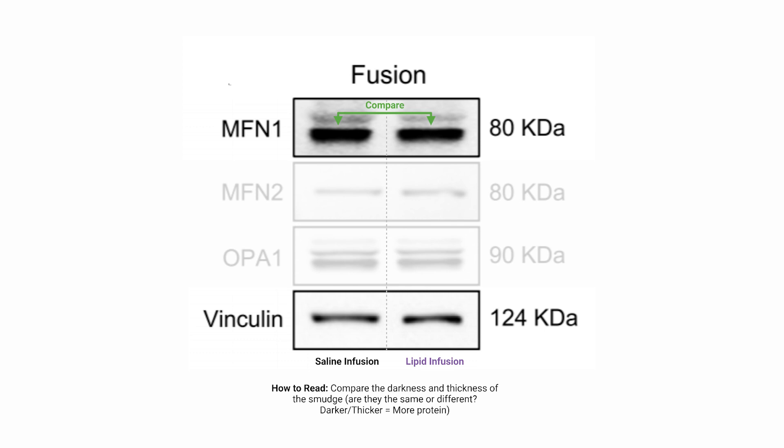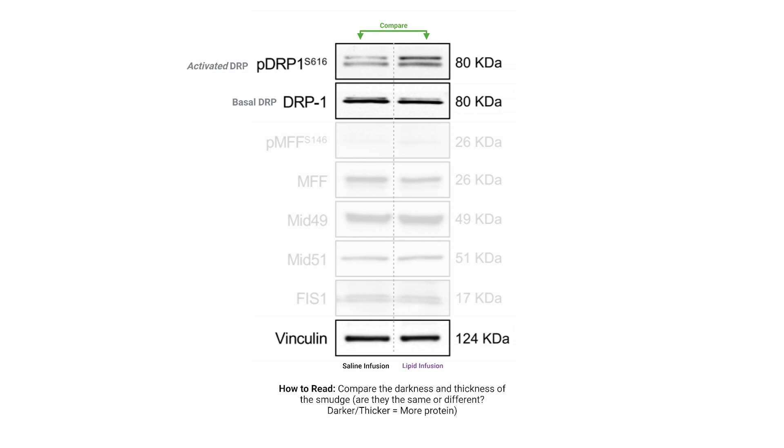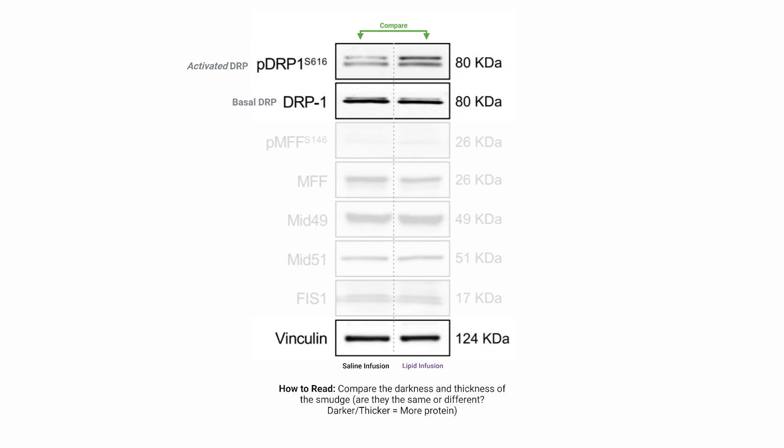However, when we look at DRP levels — which typically move to a single mitochondrion, form a collar around it, and begin to constrict to induce mitochondrial fission — basal DRP levels are unchanged, yet activated versions, known as serine-phosphorylated DRP, are elevated. This data implies that mitochondrial fission is elevated with fat infusion.